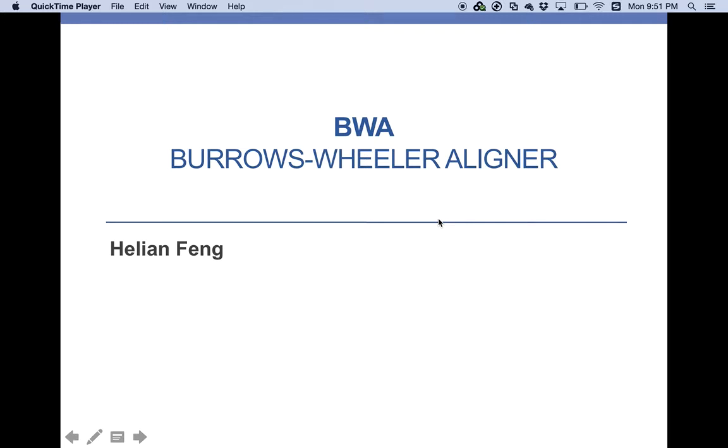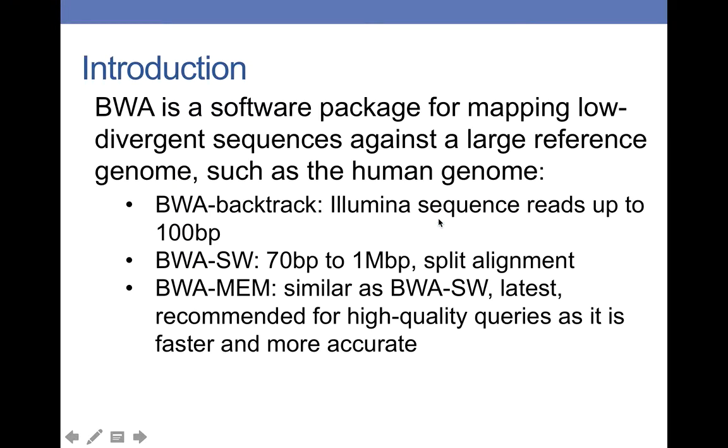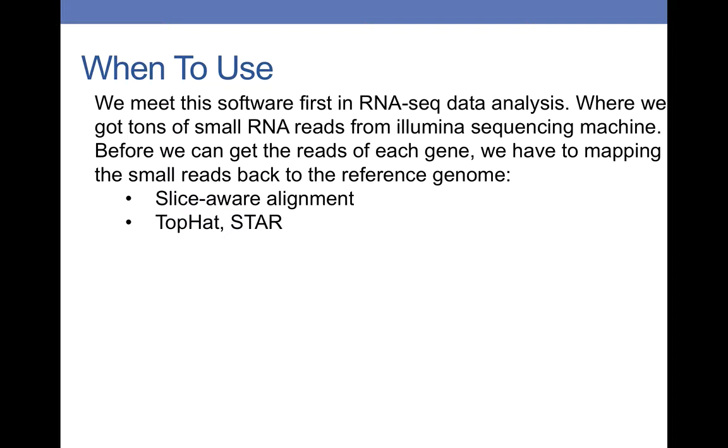Hello, this is Helian. Today I'm going to introduce you to BWA. First, what is BWA? BWA is a software package for mapping low-divergent sequences against a large reference genome such as a human genome. It contains three algorithms: BWA backtrack, BWA-SW, and BWA-MEM. We strongly recommend you to use BWA-MEM for high quality queries as it is faster and more accurate.